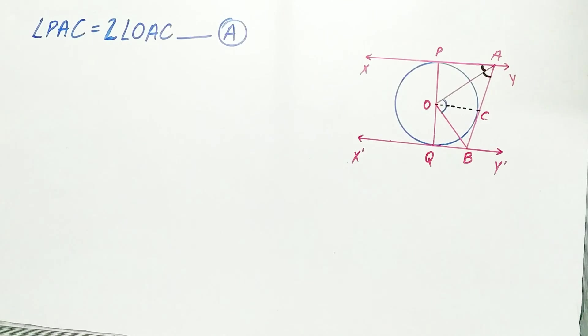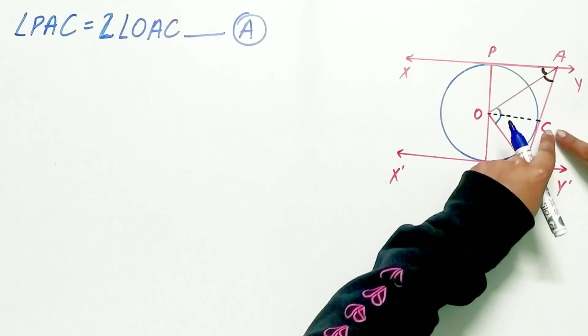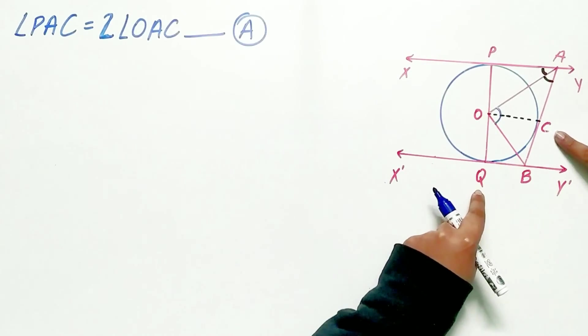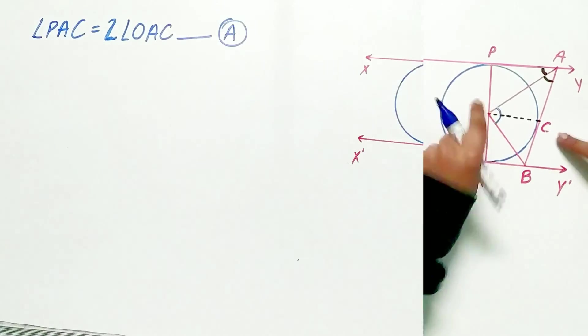Now similarly, we will prove that angle CBQ is equal to twice of angle CBO.